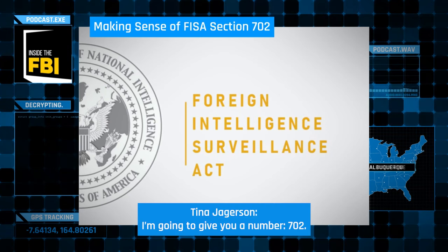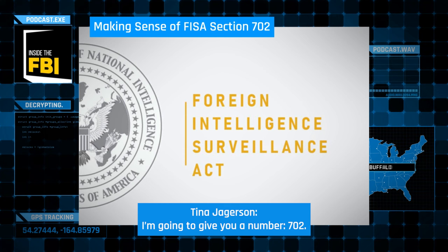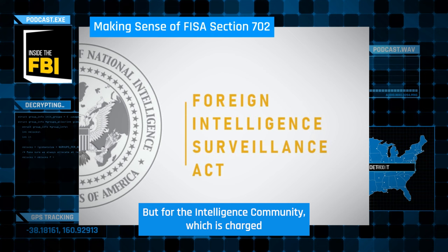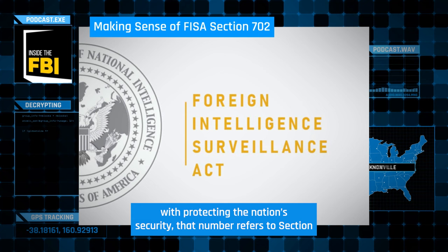I'm going to give you a number: 702. For most people, that number won't mean much, if anything. But for the intelligence community, which is charged with protecting the nation's security, that number refers to Section 702 of the Foreign Intelligence Surveillance Act, or FISA.